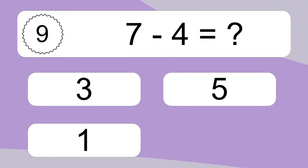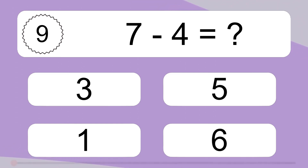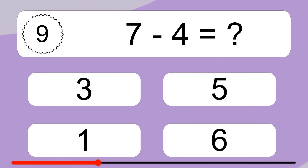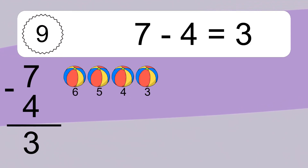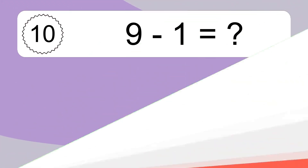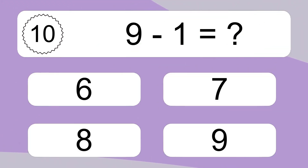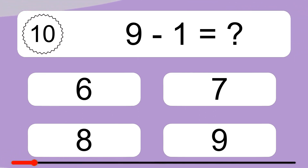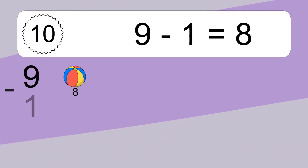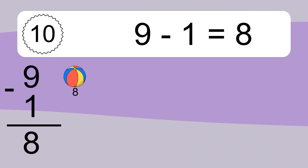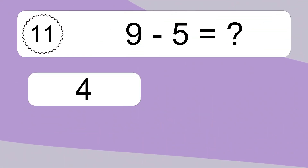7 minus 4 equals what? 7 minus 4 equals 3. Let's count it: 6, 5, 4, 3. 9 minus 1 equals what? 9 minus 1 equals 8. Let's count it: 8.